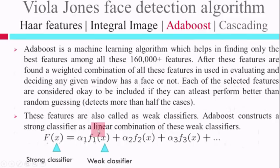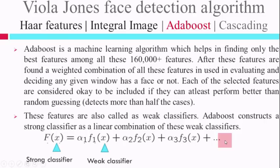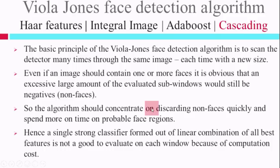A weak classifier is just a relevant feature extracted by AdaBoost. We apply that relevant feature, find the corresponding weight, and continually combine all those relevant features with their weights to form a strong classifier or strong detector. The output of a weak classifier is either 1 or 0: 1 when it identifies the feature in the image, 0 when the pattern is not present. The combination of all weak classifiers together forms a strong classifier. Generally, 2500 features are used to form a strong classifier.